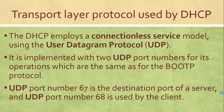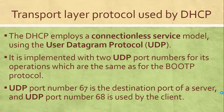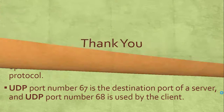UDP port number 67 is the destination port of the server, and UDP port number 68 is used by the client. So the client will use port 68 to send the request, and the server will receive on port 67.